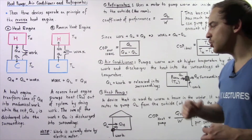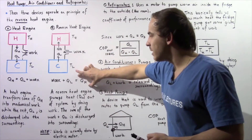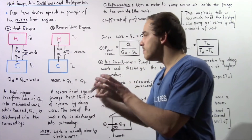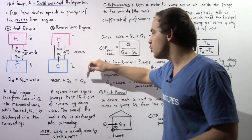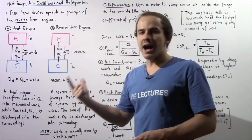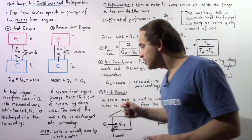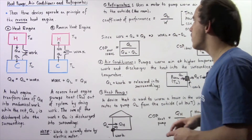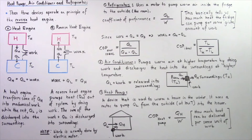A reverse heat engine pumps heat given by QL out of our system by doing work on that system. The sum of the work plus QL is then discharged into the surroundings, and that relationship is given by the equation: W + QL = QH. The work is usually done by some type of electric motor. Now let's look at the following three applications of the reverse heat engine.